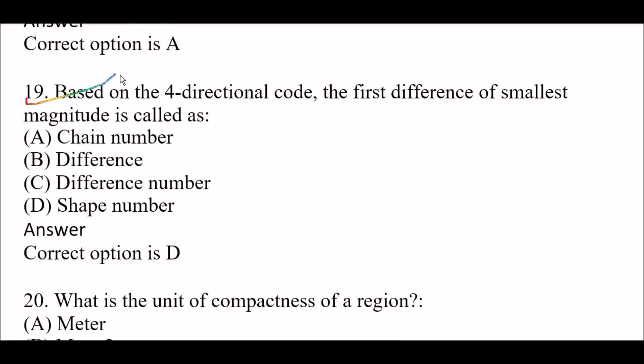Next question: Based on the four-directional code, the first difference of the smallest magnitude is called — Option A: chain number, Option B: difference, Option C: difference number, Option D: shape number. The right answer is Option D, shape number. Based on the four-directional code, the first difference of the smallest magnitude is called the shape number.